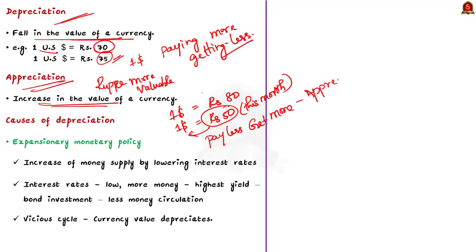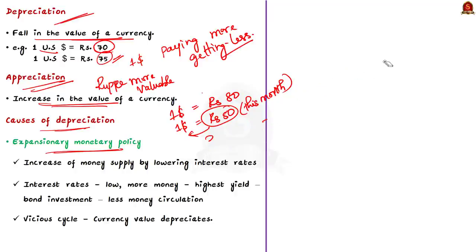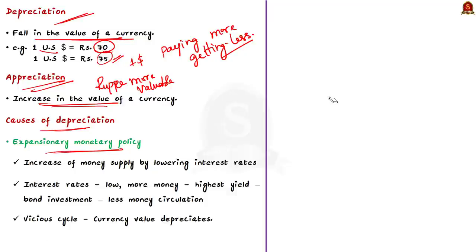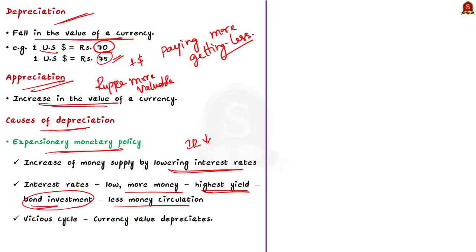The values taken here are just to show how appreciation and depreciation occur — not the actual values. Now let's look at what causes depreciation. The expansionary monetary policy and high inflation are two main causes of currency depreciation. Expansionary monetary policy is nothing but the expansion of money supply by lowering interest rates. When interest rates are lowered, more money chases the highest yield — which is the bond in this case. This creates a cycle that makes the currency value depreciate.